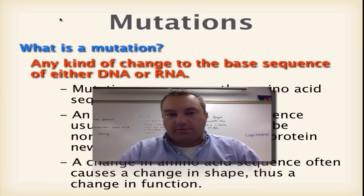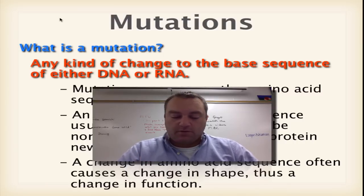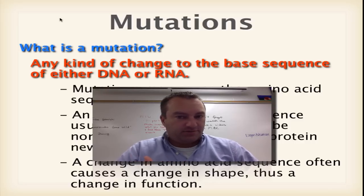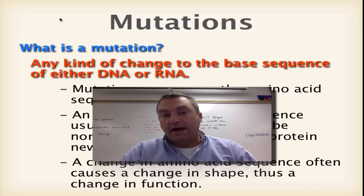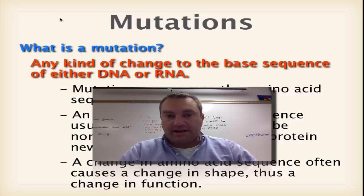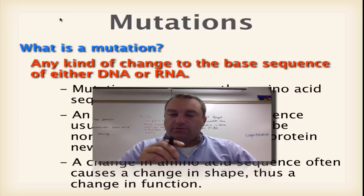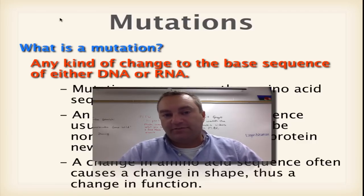Welcome to Episode 6 from our series on Chapter 13, RNA and Protein Synthesis. We've already gone over the types of RNA, the process of transcription, the process of translation, and how the genetic code is read — in other words, if you have a codon, what amino acid does it actually code for? In this final episode, we're going to talk about the different kinds of mutations.